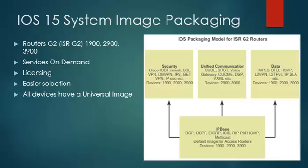Each device ships with a universal image. The technology packages — IP Base, Data, EUC, and SEC — are enabled in the universal image using Cisco software activation license keys. Each license key is unique to a particular device and is obtained from Cisco by providing the product ID and serial number.